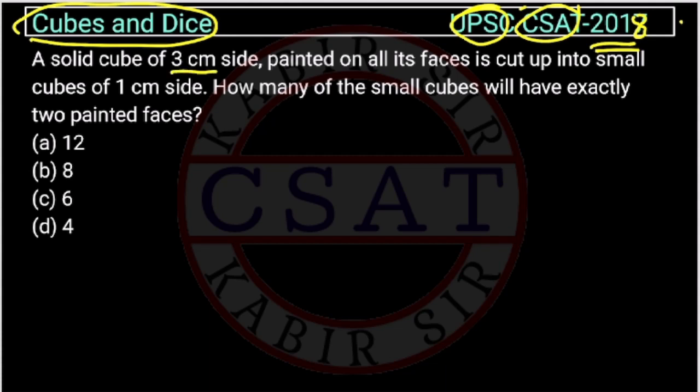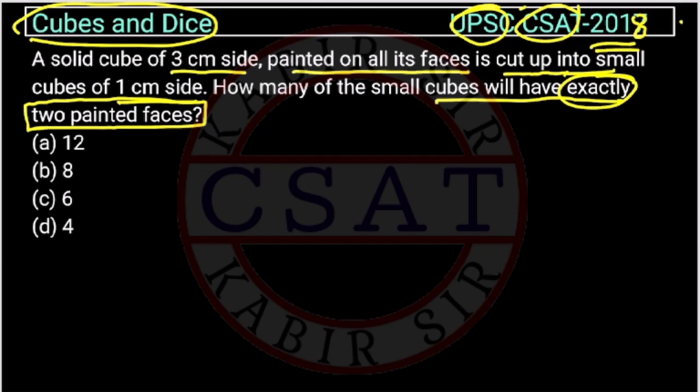A solid cube of 3 centimeter side painted on all its faces is cut up into small cubes of 1 centimeter side. How many of the small cubes will have exactly 2 painted faces?